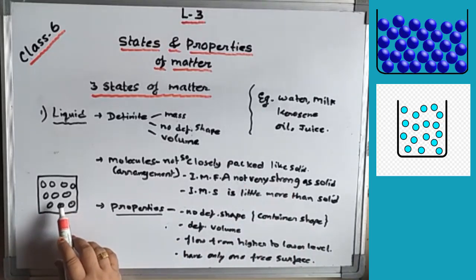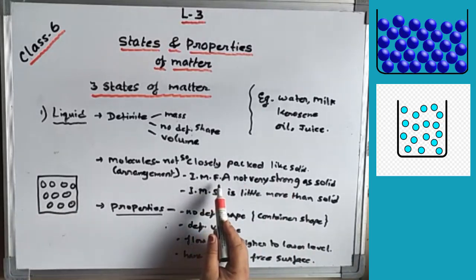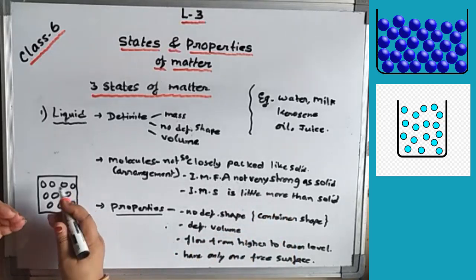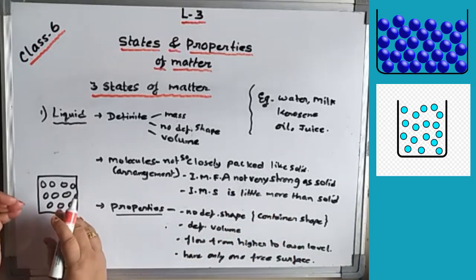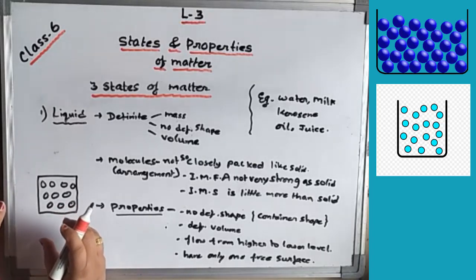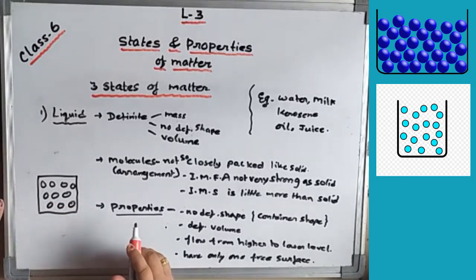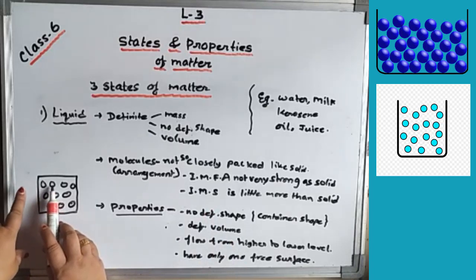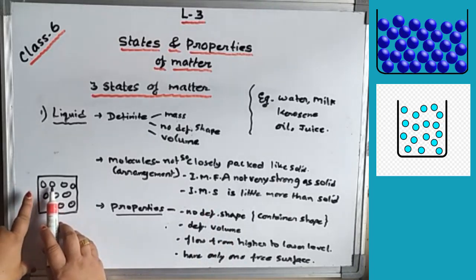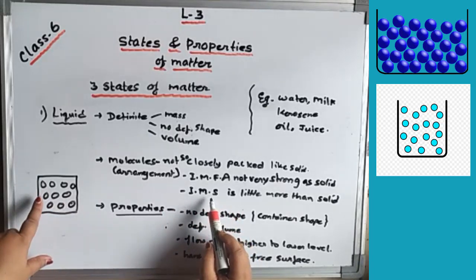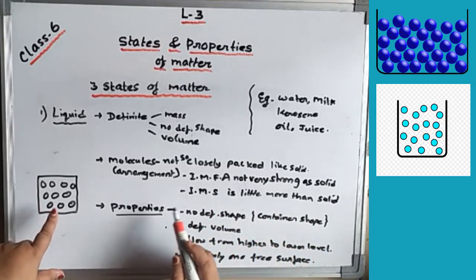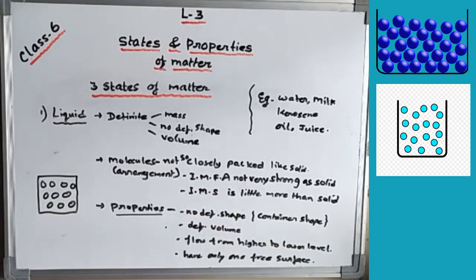Since there is a gap between the molecules in liquid, the molecular force of attraction is not as strong as in solid. The intermolecular space is a little more than in solid. These are the molecular arrangement characteristics of liquid.